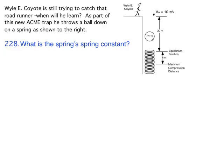Let's look at the example problem. Wile E. Coyote is still trying to catch that roadrunner. As part of this new ACME trap, he throws the ball down on the spring as shown to the right. So he throws it down at 10 meters per second. The ball is 200 kilograms. The ball drops 20 meters until it impacts the spring. And once it hits the spring, the spring stretches downwards an additional 6 meters until it reaches its maximum compression distance.